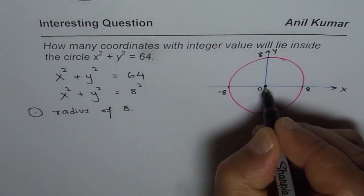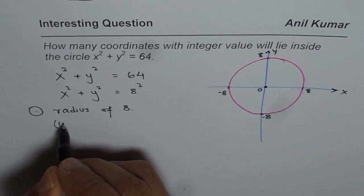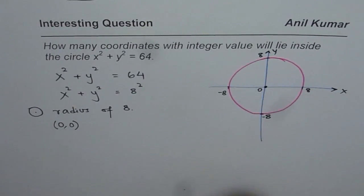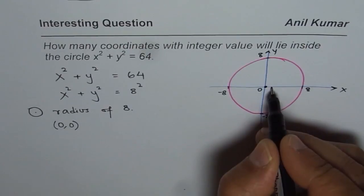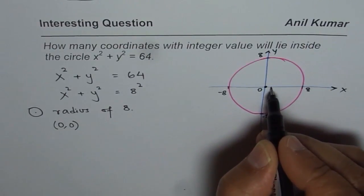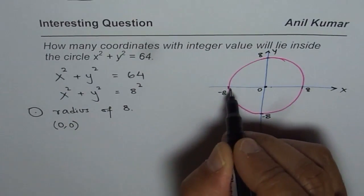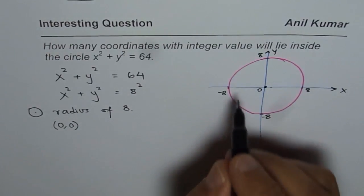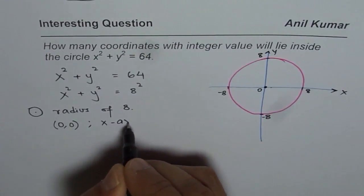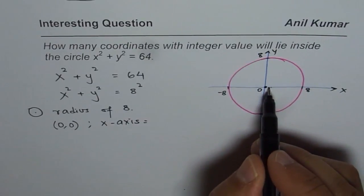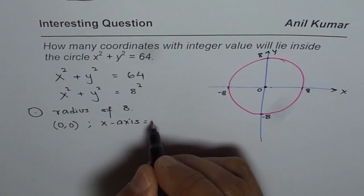Definitely we can start from the origin itself — origin (0, 0) is 1 point right in the center. Now, on the x-axis we will have points (1,0), (2,0), (3,0) up to (7,0), and on the other side down to (-7,0). So that gives us 7 on the right and 7 on the left, making 14 points on the x-axis.